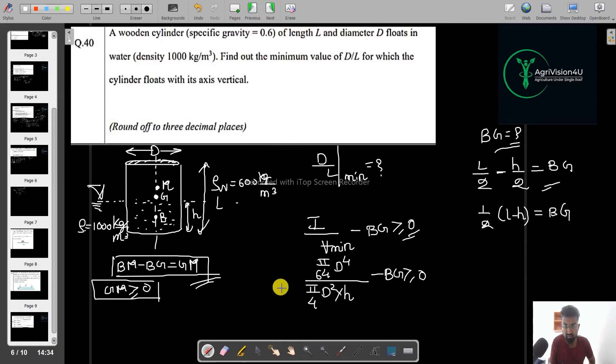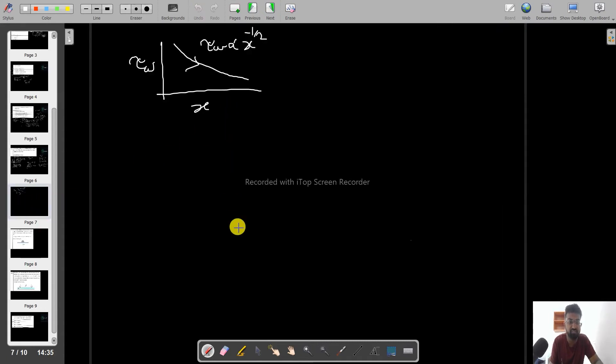So after putting, we will get, we will cut this, this, this with this. And then 4, 16. So I can directly write it as D square by 16 of y minus 1 by 2 L minus h. It should be greater than or equal to 0. But since there is an unknown h. So to calculate this h, I will just equate this particular weight of the body.